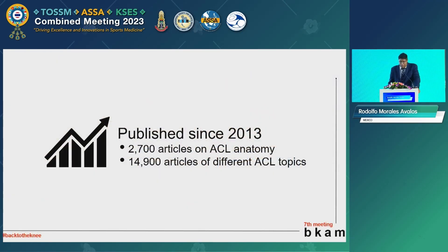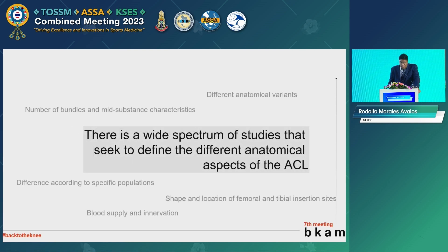Since 2013, there have been about 217 articles about ACL anatomy, and in the last 10 years, almost 50,000 articles about different ACL topics. There is a wide spectrum of studies that seek to define the anatomical aspects of the ACL.